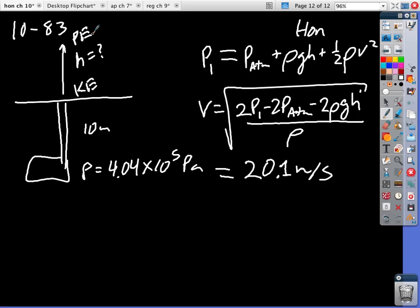Yeah, and then now I can say one-half M V squared is equal to MGH. That goes away. H is equal to V squared over 2G.